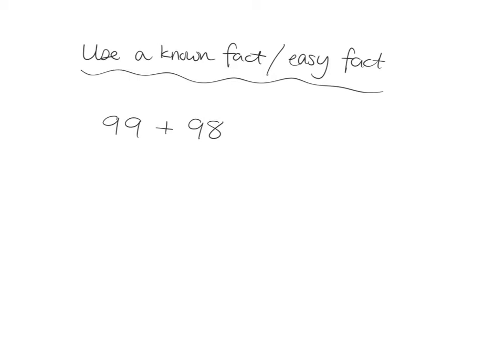So say you were asked to do 99 plus 98. Of course, you can go 9 and 8 is 17, carry one, etc., go through the whole thing. But you can also get the answer very quickly by thinking: you know a nice easy fact—you know 100 plus 100 gives you 200—and you can use that to get what 99 plus 98 is. Because this is just one less than 100, and this is just two less than 100, so in total your answer is going to be three less than 200, so it's going to be 197.